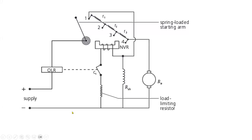For this faceplate starter connected to a shunt motor, you can see that the field winding is in parallel to the armature assembly, and the two protective devices on the faceplate starter are the no-volt relay and the overload relay.